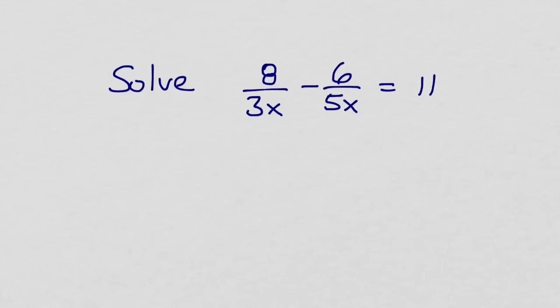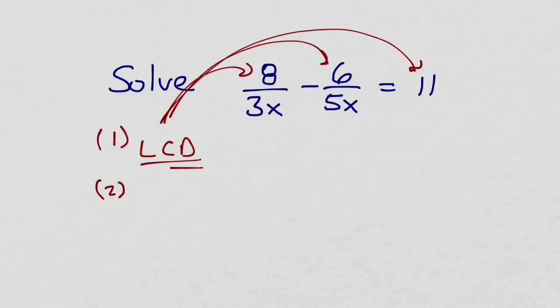As with the first example, we need to identify the least common denominator, and then I want to multiply each of the numerators by that, including any whole numbers. That should give us a simpler equation that we can follow steps two and three to try to solve.